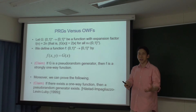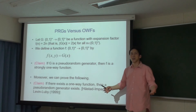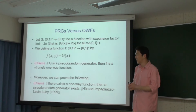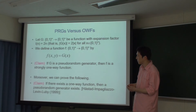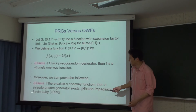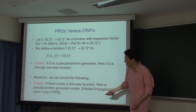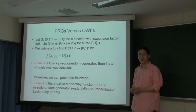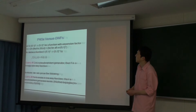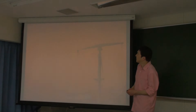Håstad、Impagliazzo、Levin、Lubinが1999年に証明したことは、1-wayファンクションが存在すれば数度ランダムジェネレーターも作れます。つまりワンウェイファンクションから数度ランダムジェネレーターを作れますし、逆もできる。ワンウェイファンクションが存在することと数度ランダムジェネレーターが存在することは同値です。